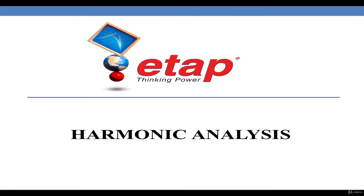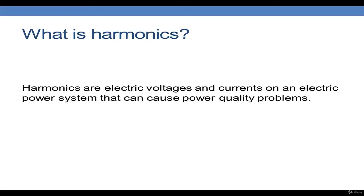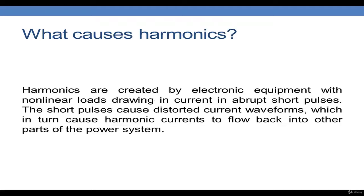Harmonics are electric voltages and currents on the electric power system that can cause power quality problems. Harmonics are as old as the generator. In a generator, since the field windings are not uniformly distributed, they create distortions in the voltage and current waveform. The distortions at the point of generation are very small, about 1 to 2 percent.